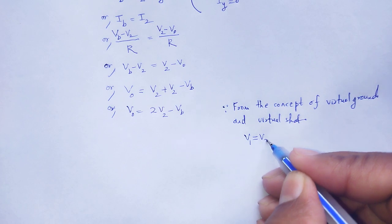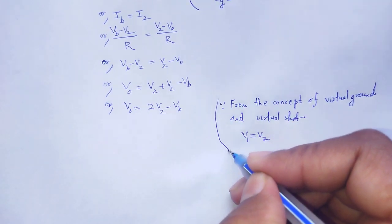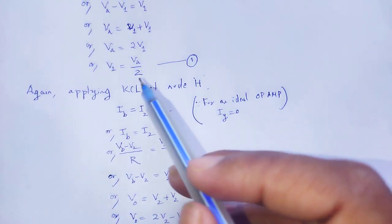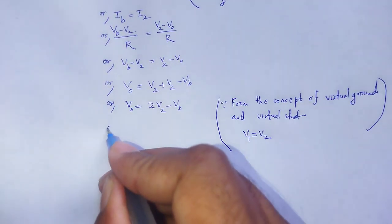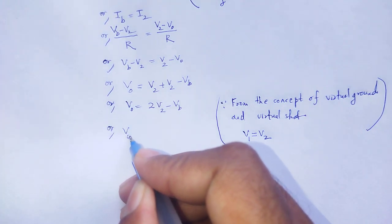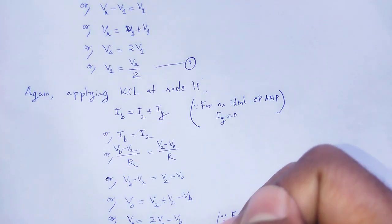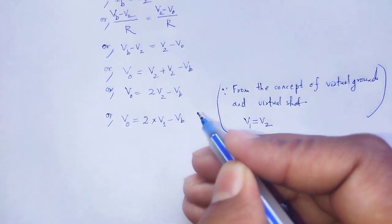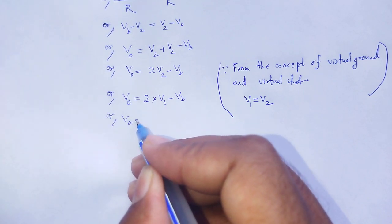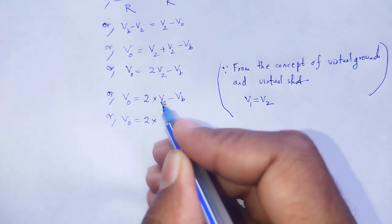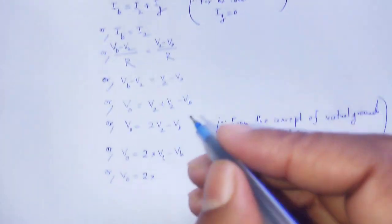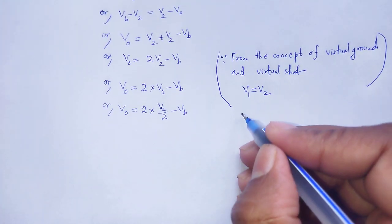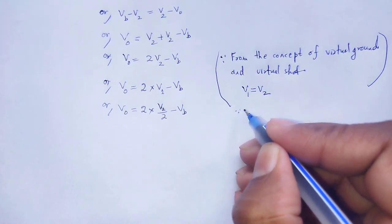From the concept of virtual ground, V1 is equal to V2. In place of V2 we can substitute the value of V1. Therefore, Vo equals 2V1 minus Vb. Substituting from equation number one, V1 equals Va divided by 2, so Vo equals 2 times Va over 2 minus Vb.